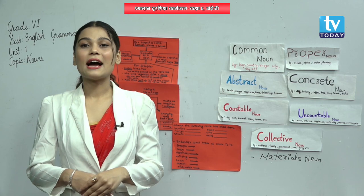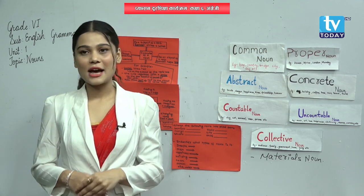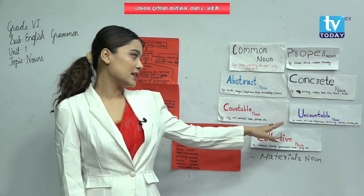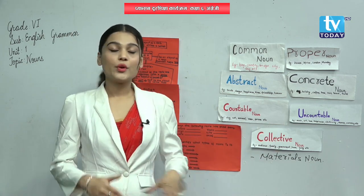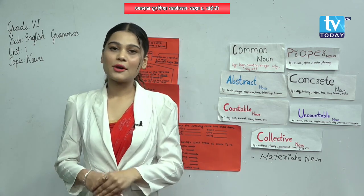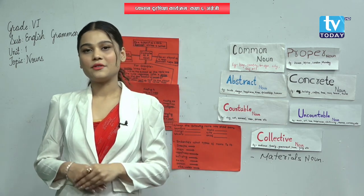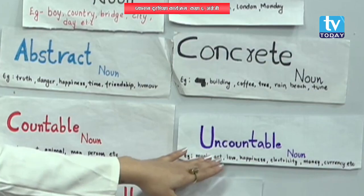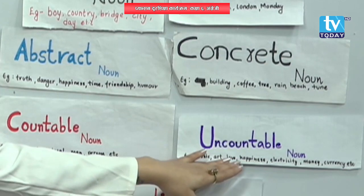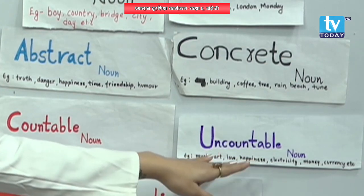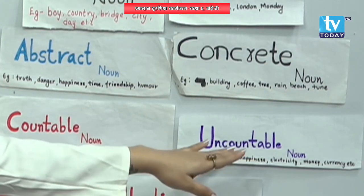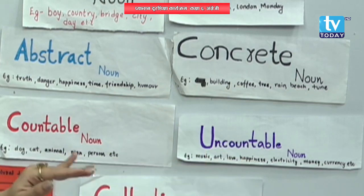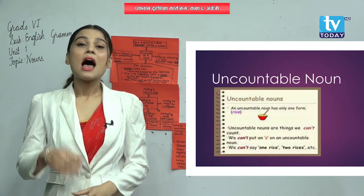Another one is uncountable noun — we cannot count uncountable noun. For example, music, art, love, happiness, electricity, money, currency, etc. These are all uncountable nouns.